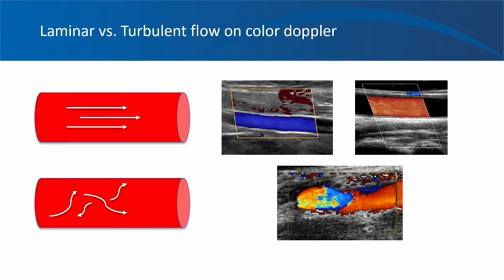When blood is flowing smoothly in a blood vessel — laminar flow — you see either red or blue shades, pretty much uniform, and red or blue just depends on the direction of blood flow. If the sampled area has turbulent flow with high velocities and blood moving in different directions, you see a mixture of color signals which resemble a twinkling star or fireworks.